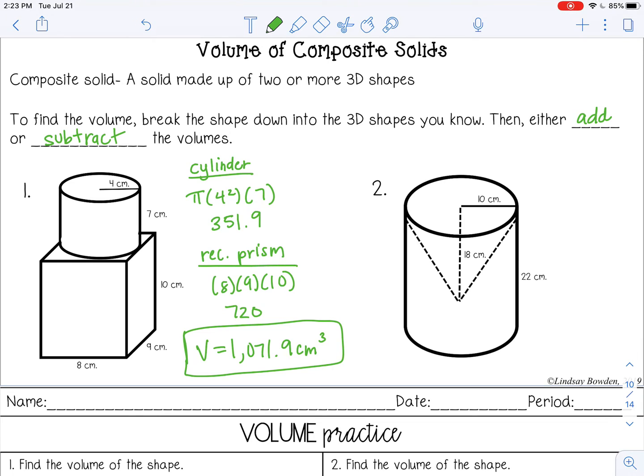And then for number two, we have a cylinder and then we have a cone that looks like it's been cut out of it. So in this one, I'm not going to add, I'm going to be subtracting to find the final. So I have a cylinder and I have a cone.